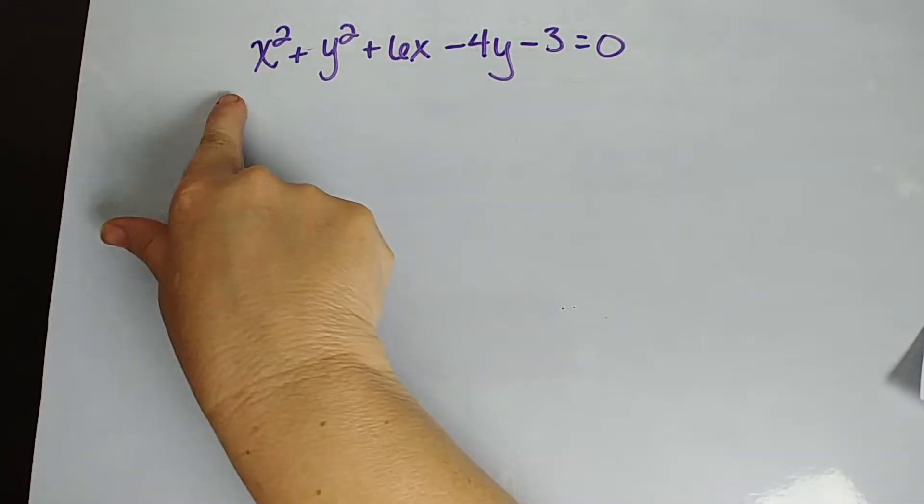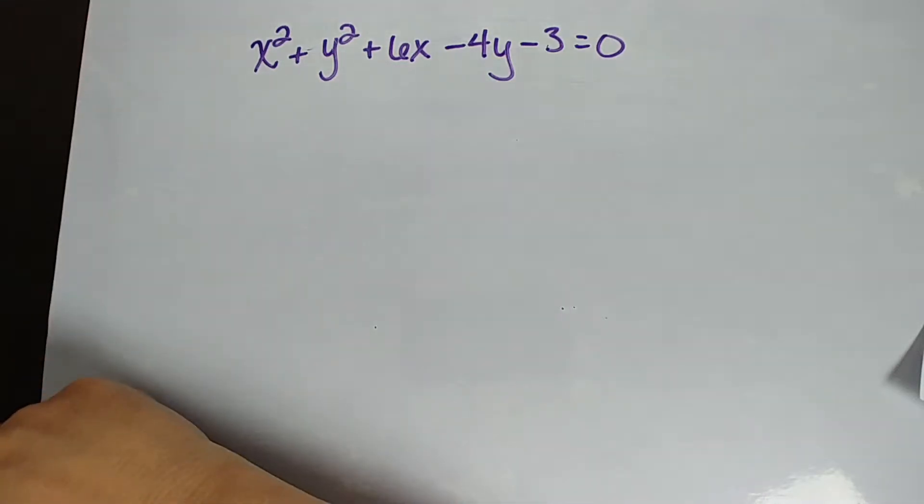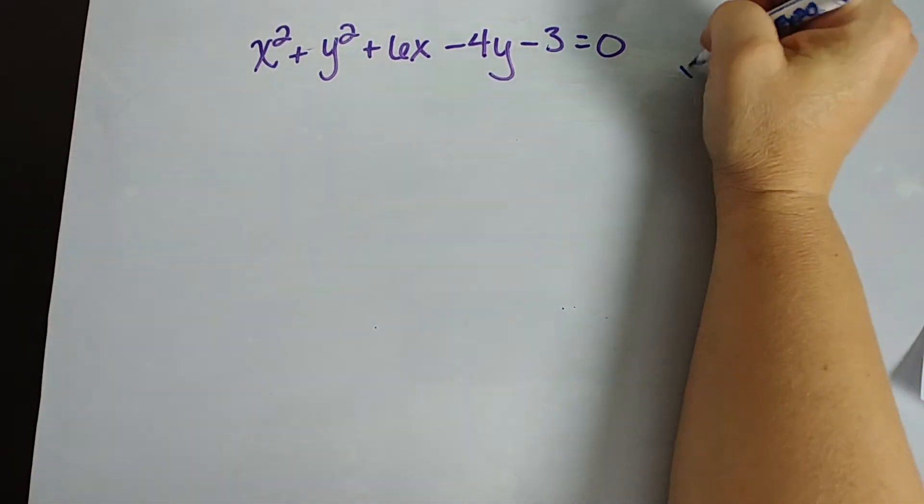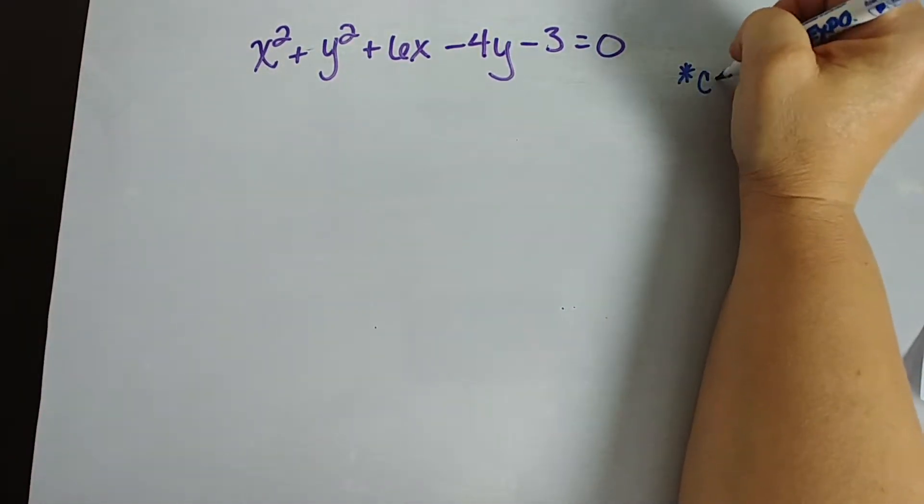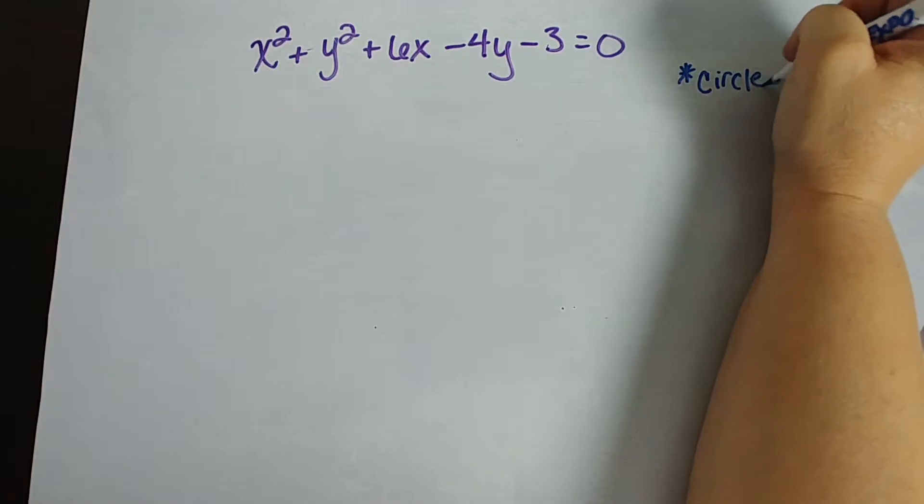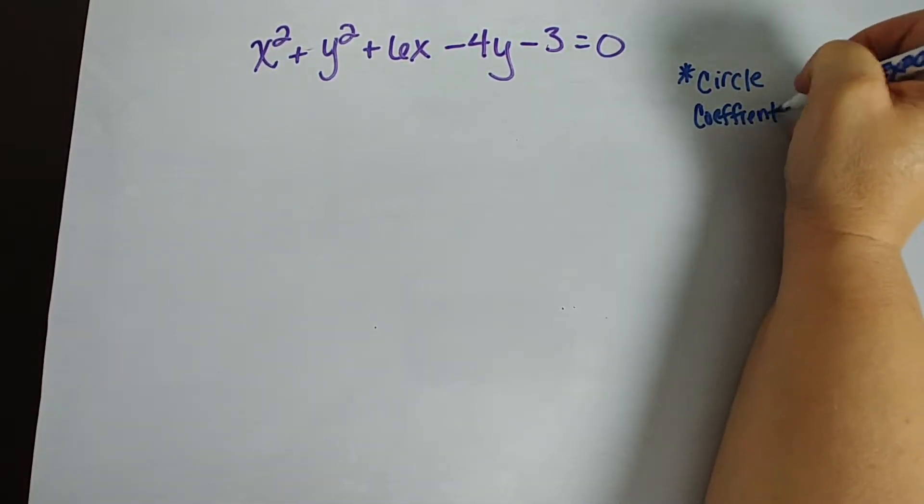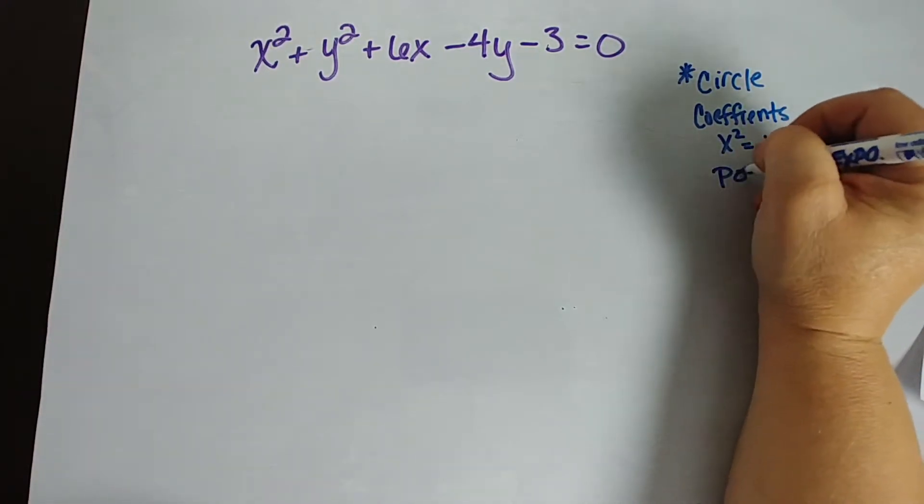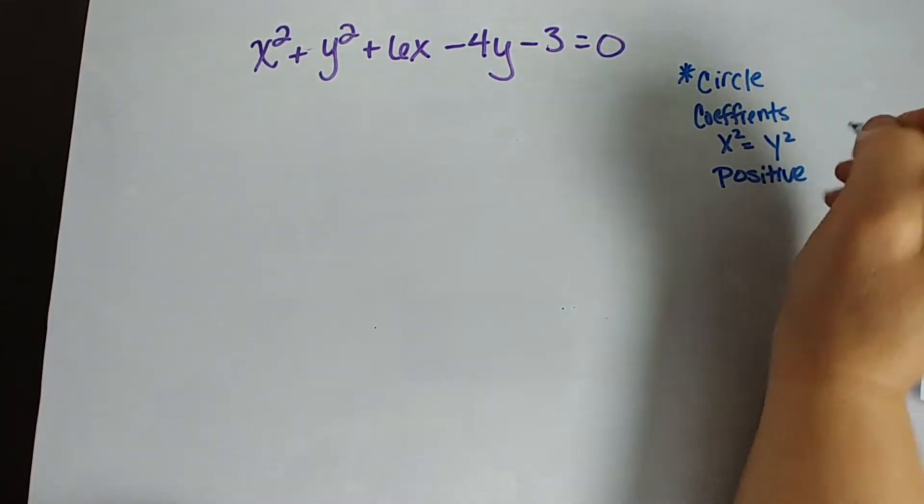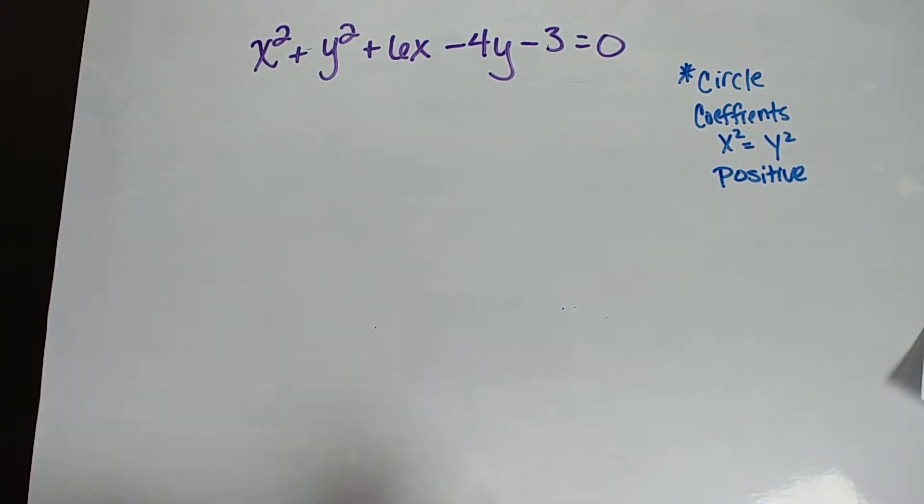Let me show you when there's no xy term, how easy it is. I see that x squared and y squared have the same coefficient. The coefficient is 1. They are also both positive. So I know this is going to be a circle. We've got coefficients of x squared equal y squared, and they are both positive. You can do your discriminant test, but we haven't gotten into that yet in any videos, so we don't need it just yet.